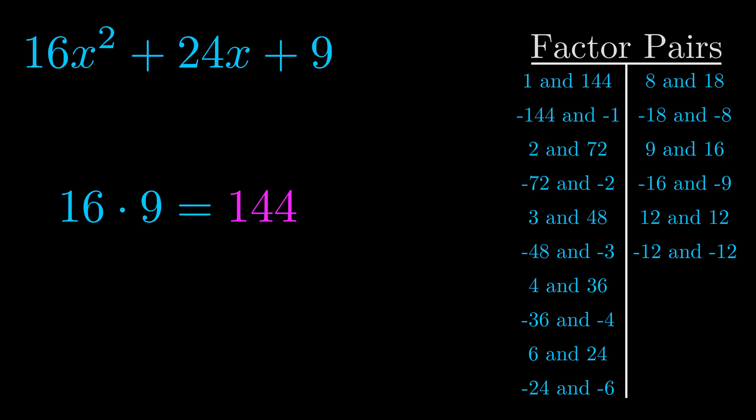The b value is the coefficient on the x term—that's the middle term, the one we haven't done anything with yet. And really, this is the only factor pair that we need.